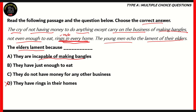Option A says they are incapable of making bangles — this is incorrect because the passage says 'the cry of not having money to do anything except carry on the business of making bangles.' The only thing they can do is make bangles, so option A is wrong. Option B says they have just enough to eat, but the passage says 'not even enough to eat' — so they are even poorer than subsistence levels, making option B incorrect. The right answer is option C: they do not have money for any other business. This is perfectly encapsulated in the first part of the passage: 'the cry of not having money to do anything except carry on the business of making bangles.'